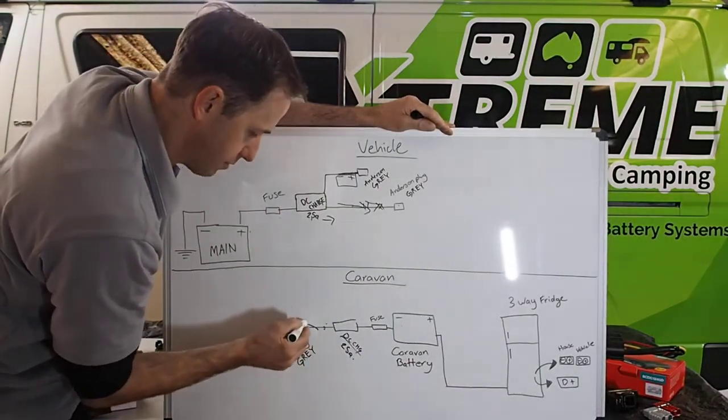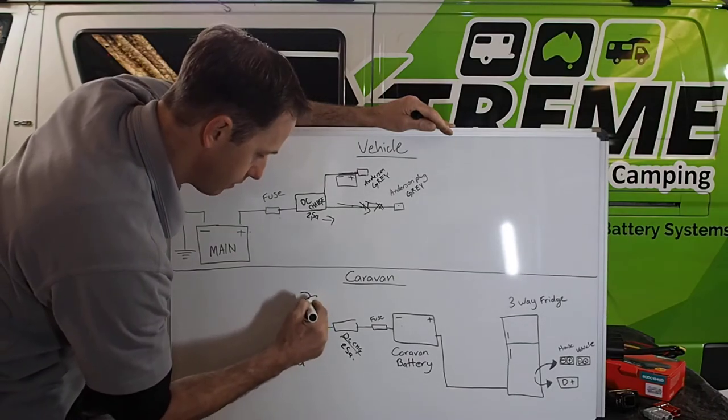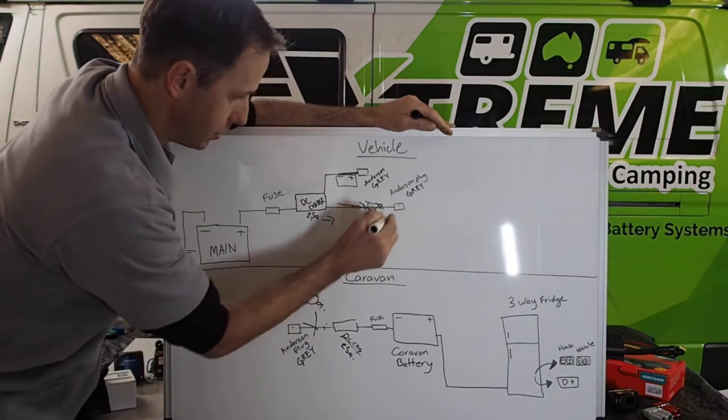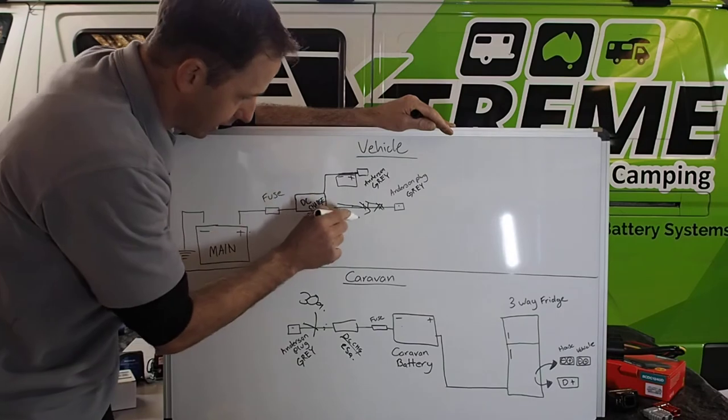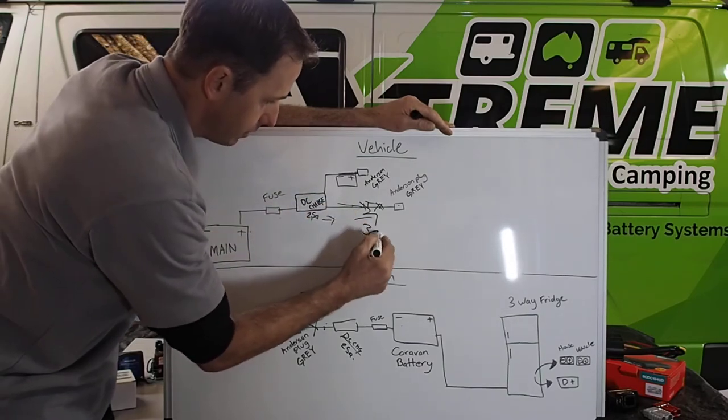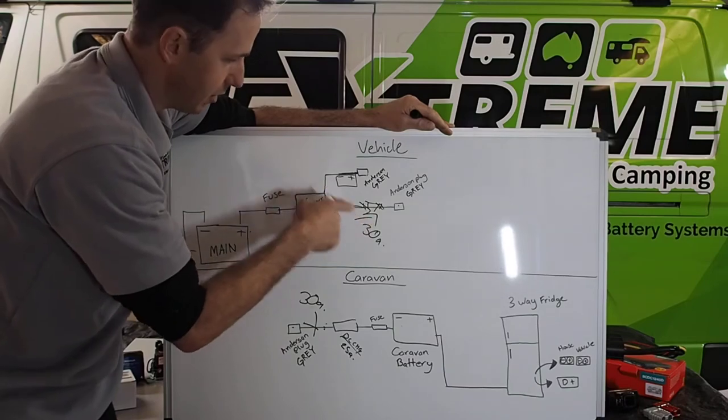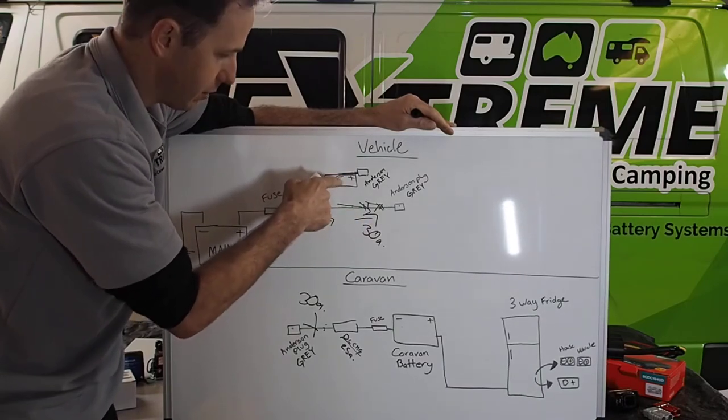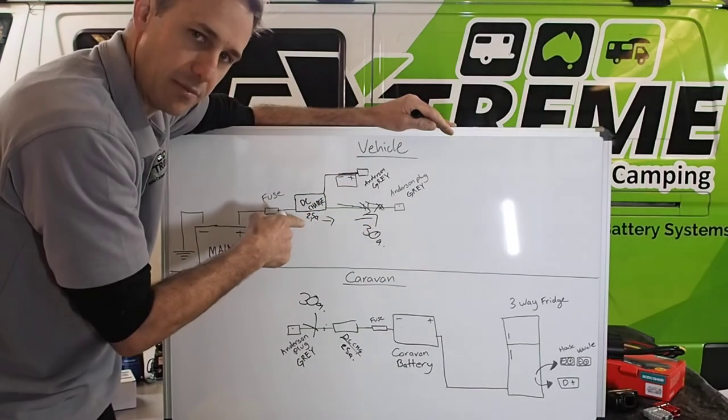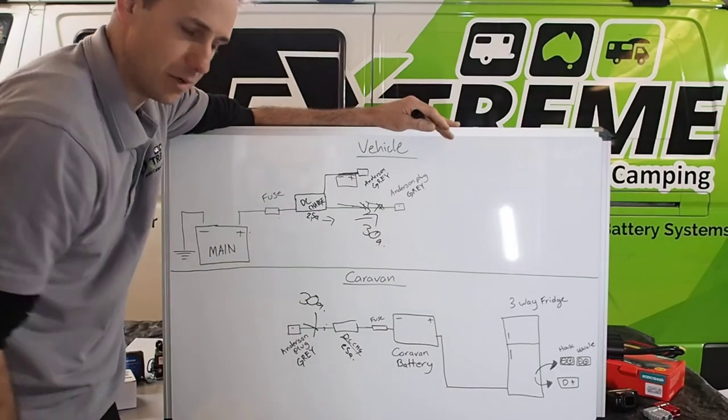that means you're pulling 30, or potentially pulling 30 amps out of this system. Now, you're pulling 30 amps from a battery that's receiving a 25 amp charge. We all know what's going to happen.